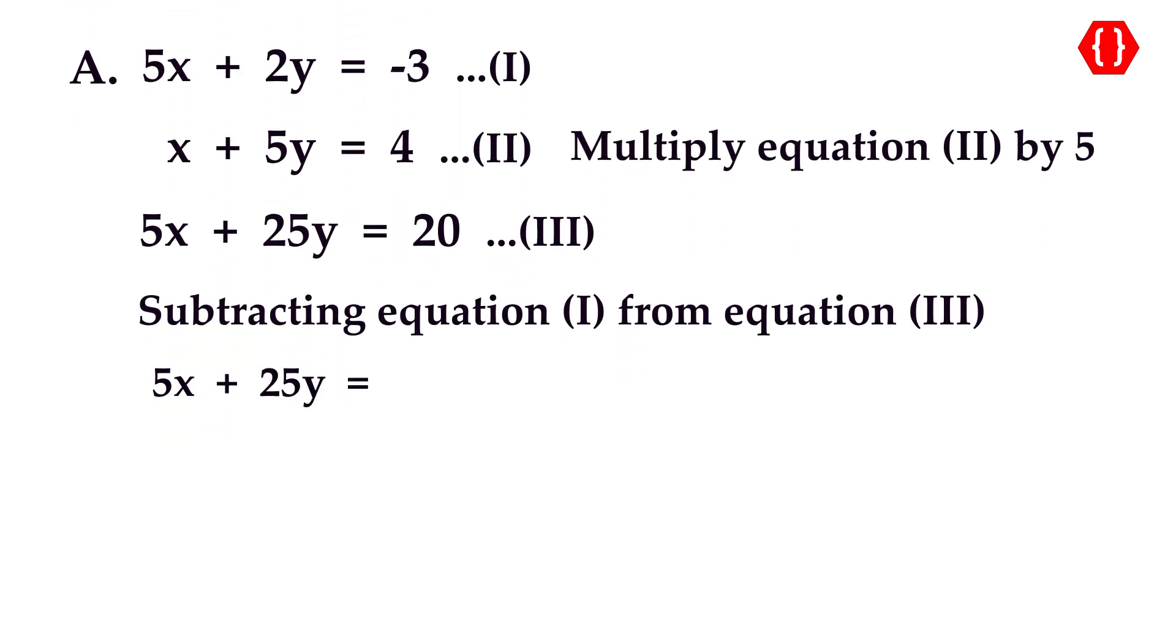That is 5x + 25y = 20 minus 5x + 2y = -3. Now by subtracting we will eliminate 5x.